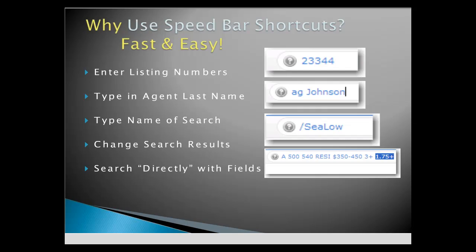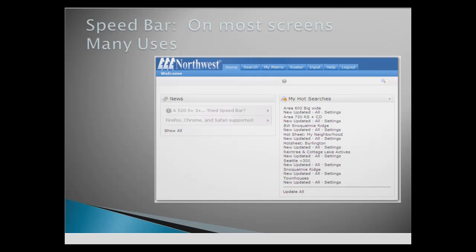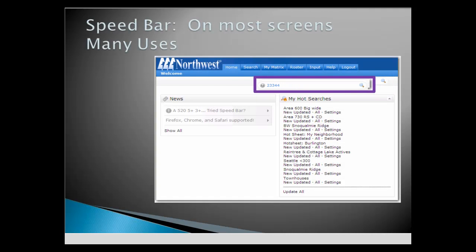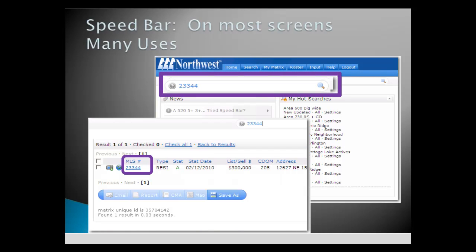Hints on how the notation works are located in the Help icon to the left of the Speed Bar window. From any Matrix screen, type a listing number into the Speed Bar, hit Enter, and the listing will immediately appear.